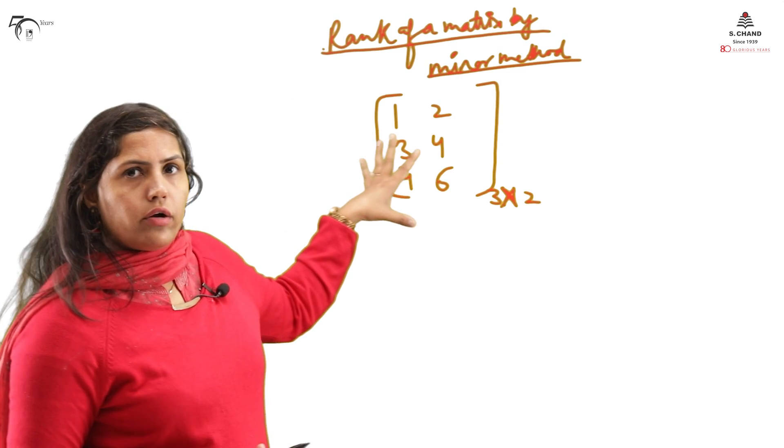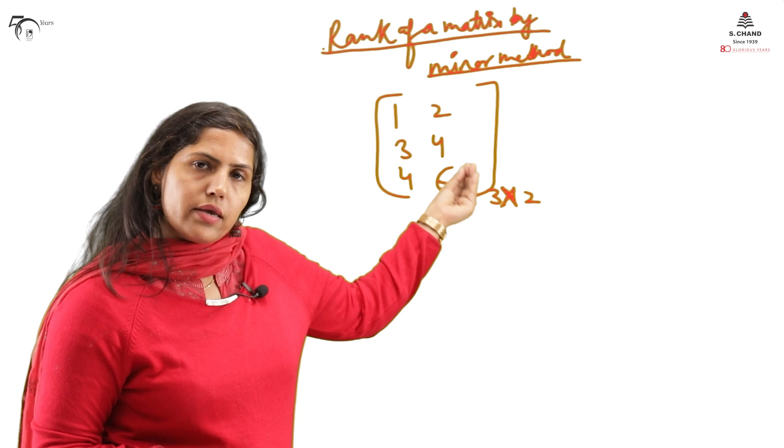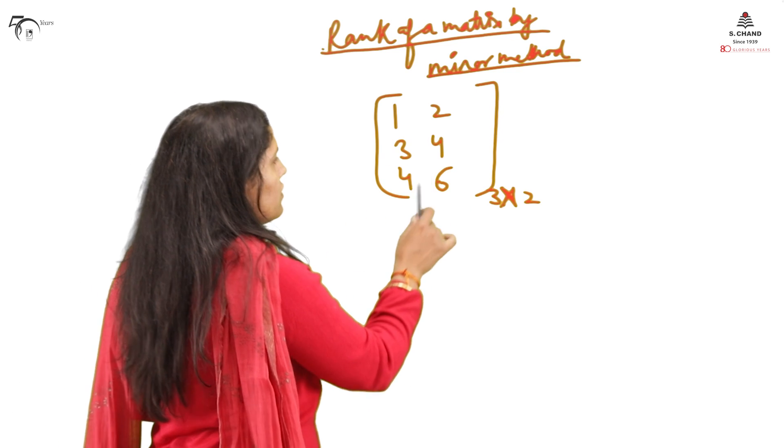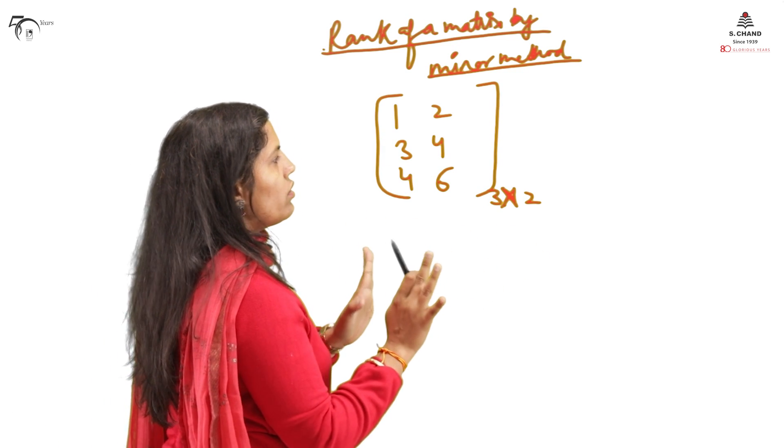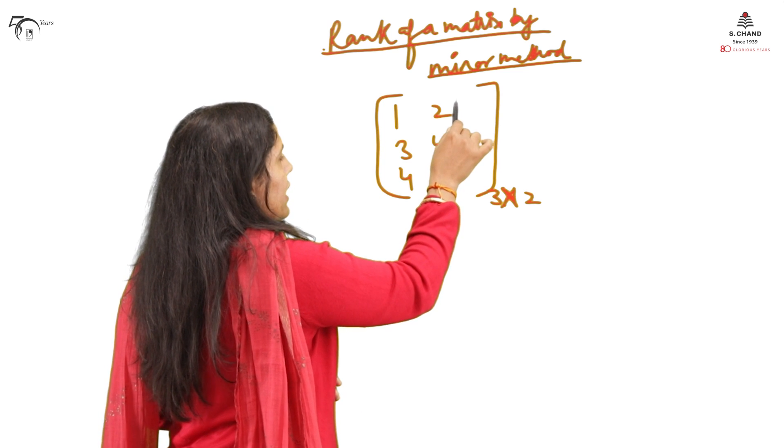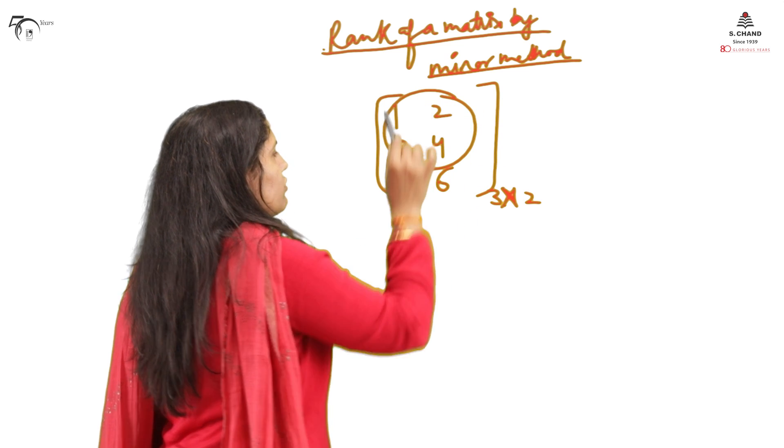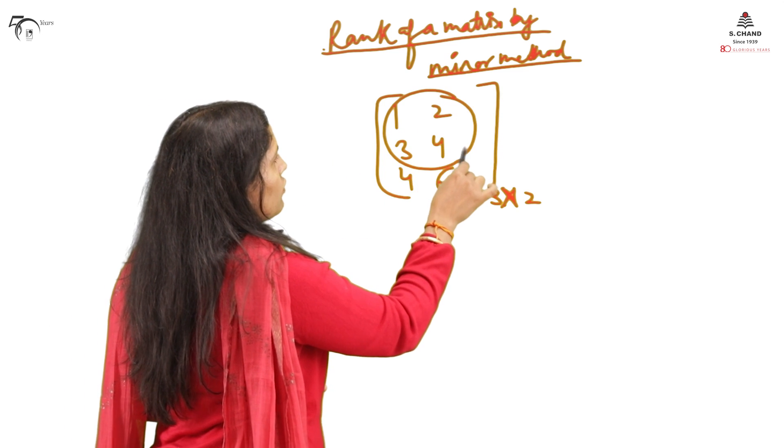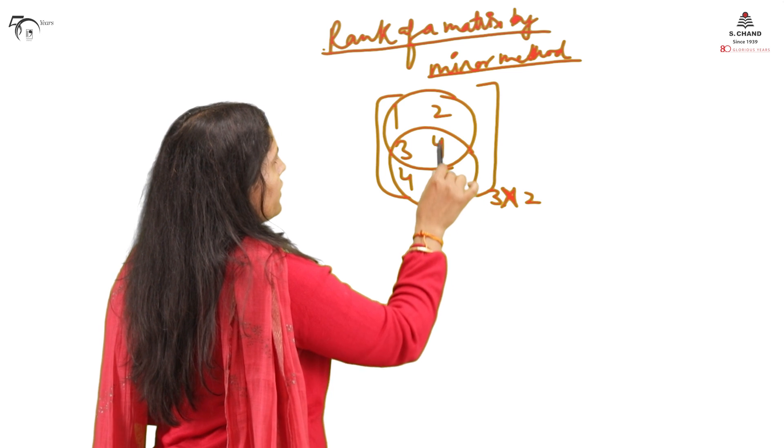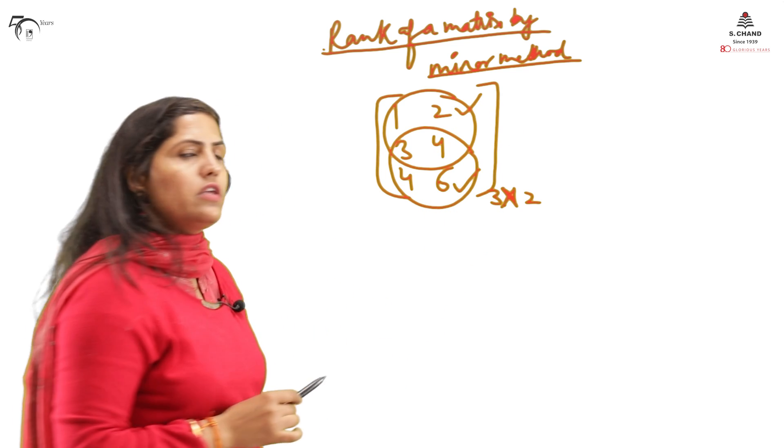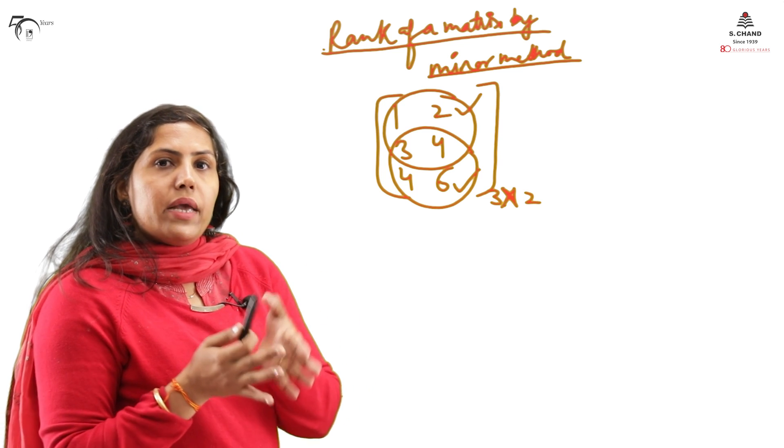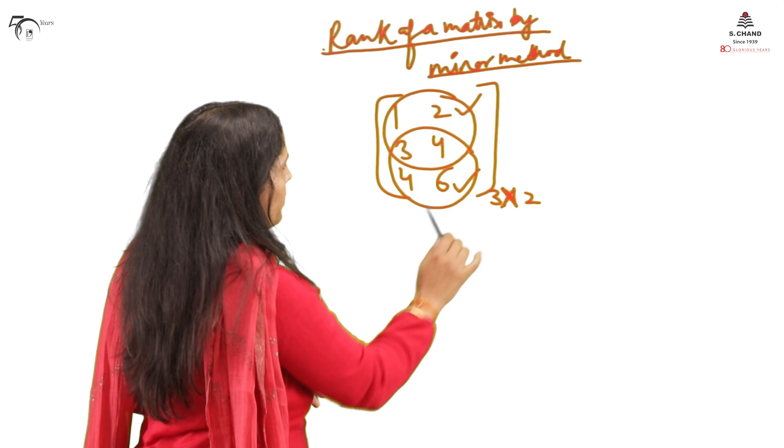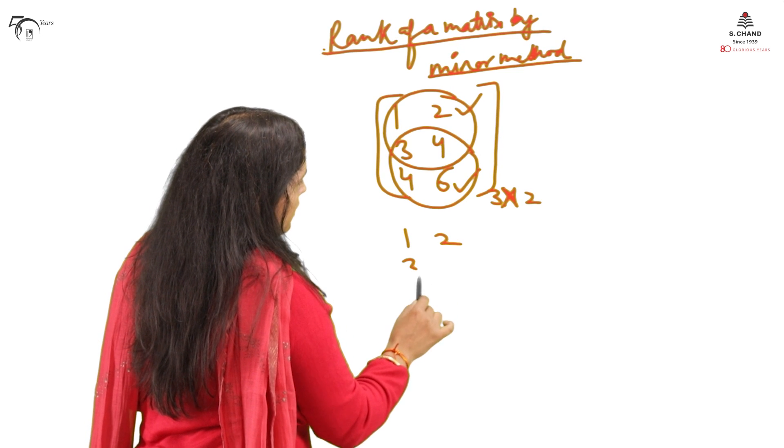Now first observe this matrix and then we'll work on the minor concept. The highest order square matrix you can extract from this matrix - this is 3 cross 2, so you cannot extract a 3 by 3 matrix, but easily 2 by 2 matrix you can extract. And how many 2 by 2 matrices? So this is one matrix of 2 by 2, then this is another 2 by 2 matrix. My point is, if you see any matrix, just see the biggest square matrix you can take out from that matrix.